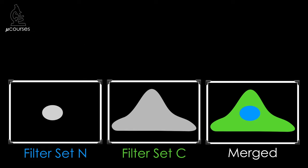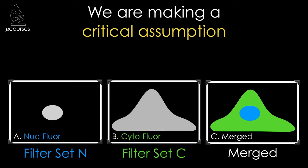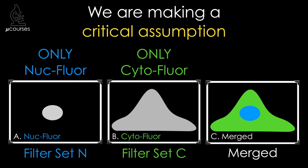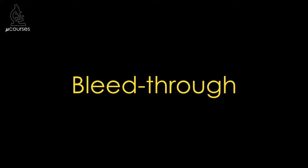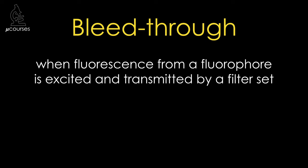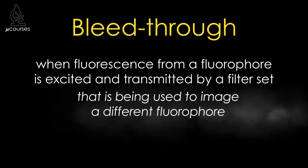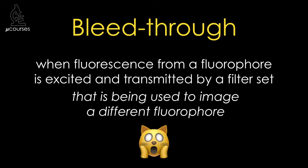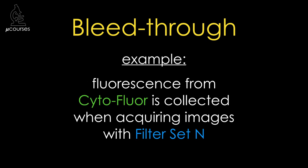It's very important to understand that if we collect images in this way and label our figures with the fluorophores that correspond to the filters we used, we are making a critical assumption that the images only contain signal from the fluorophores we intended to image. Unfortunately, this assumption is often incorrect because of bleed-through, also known as crosstalk. Bleed-through is when fluorescence from a fluorophore is excited and transmitted by a filter set that is being used to image a different fluorophore.